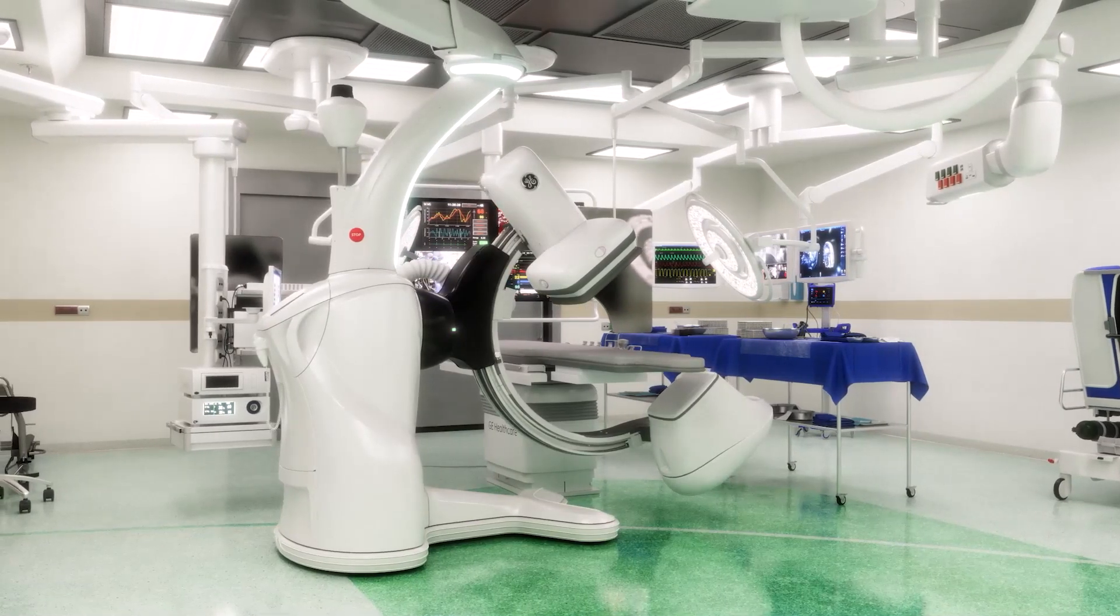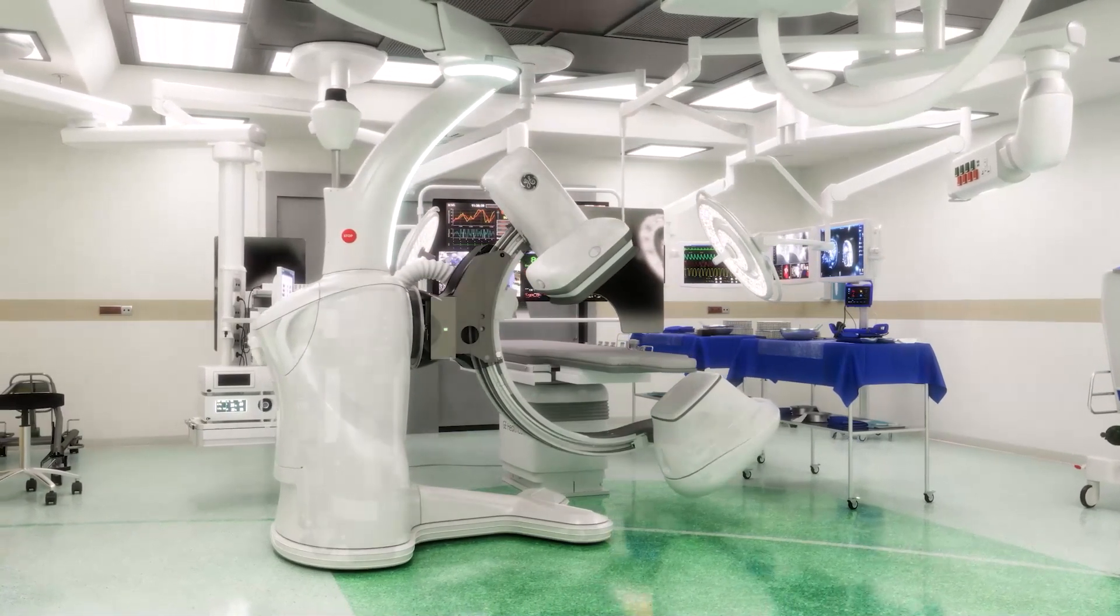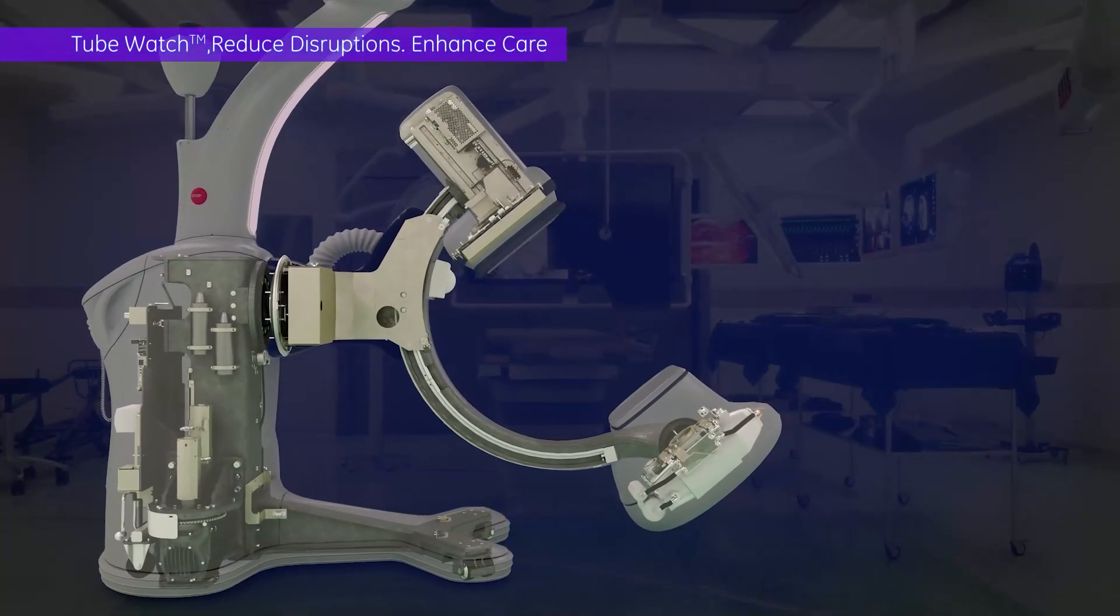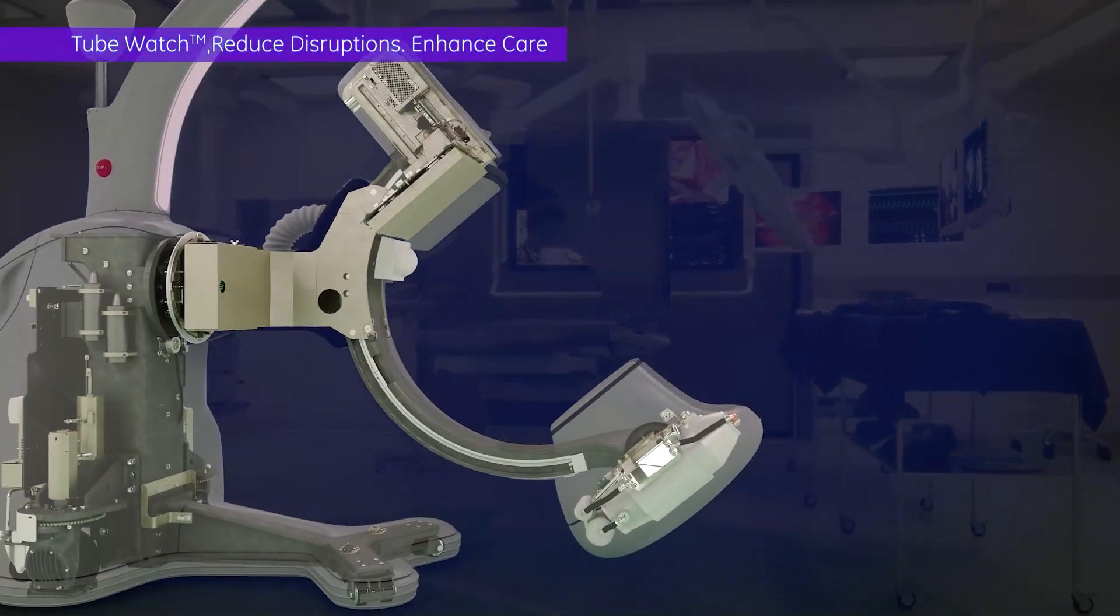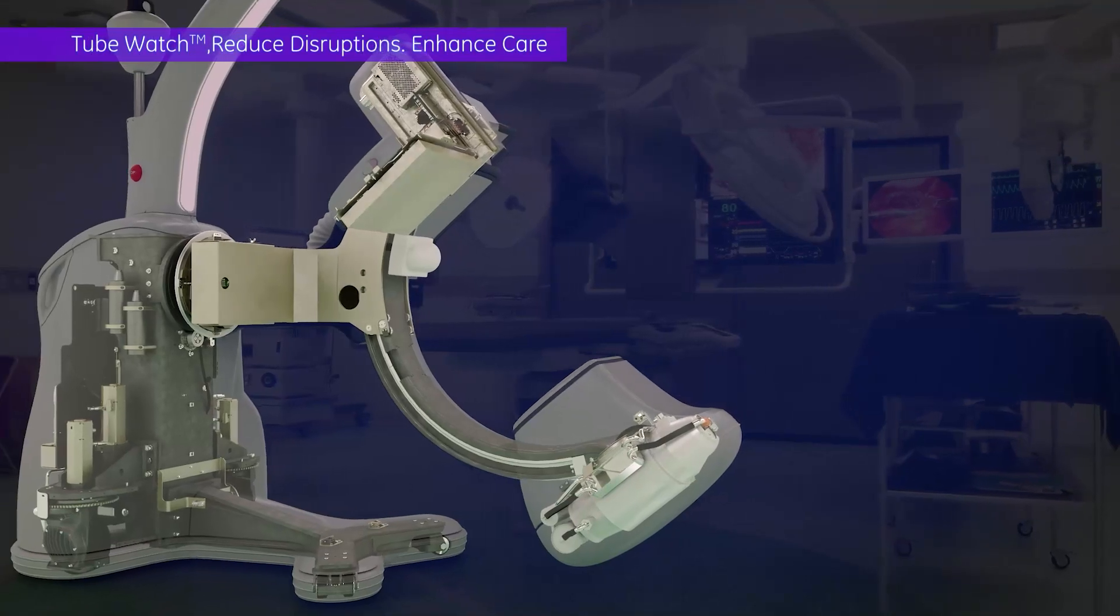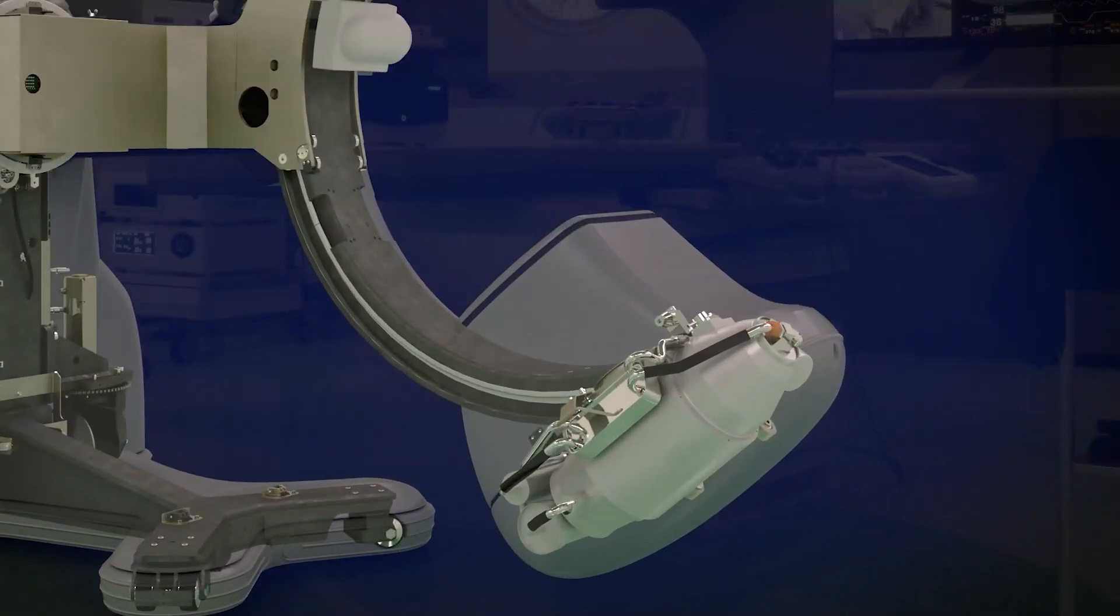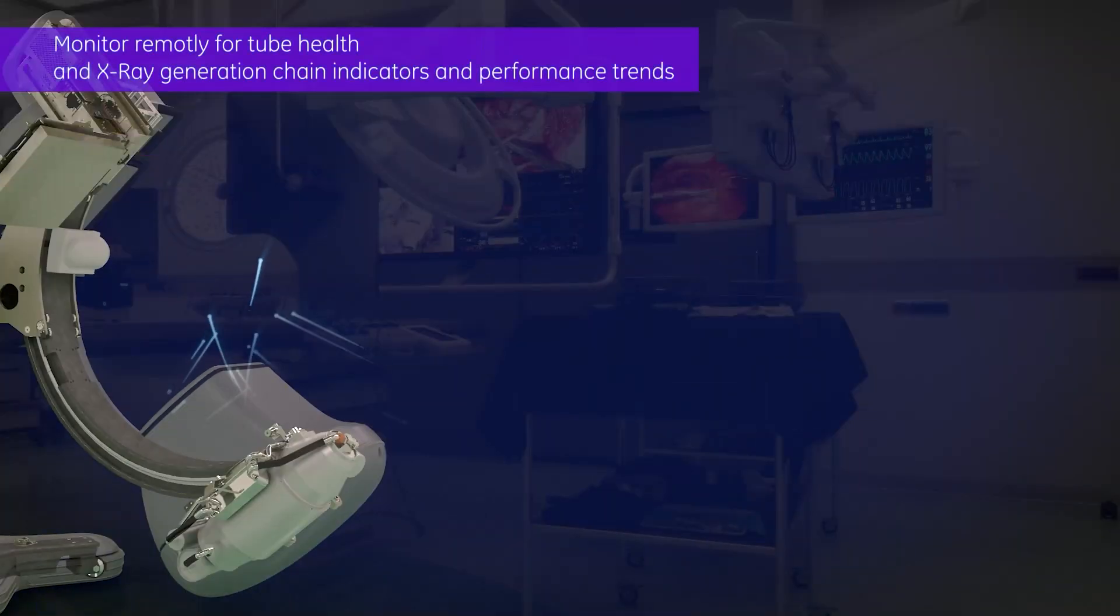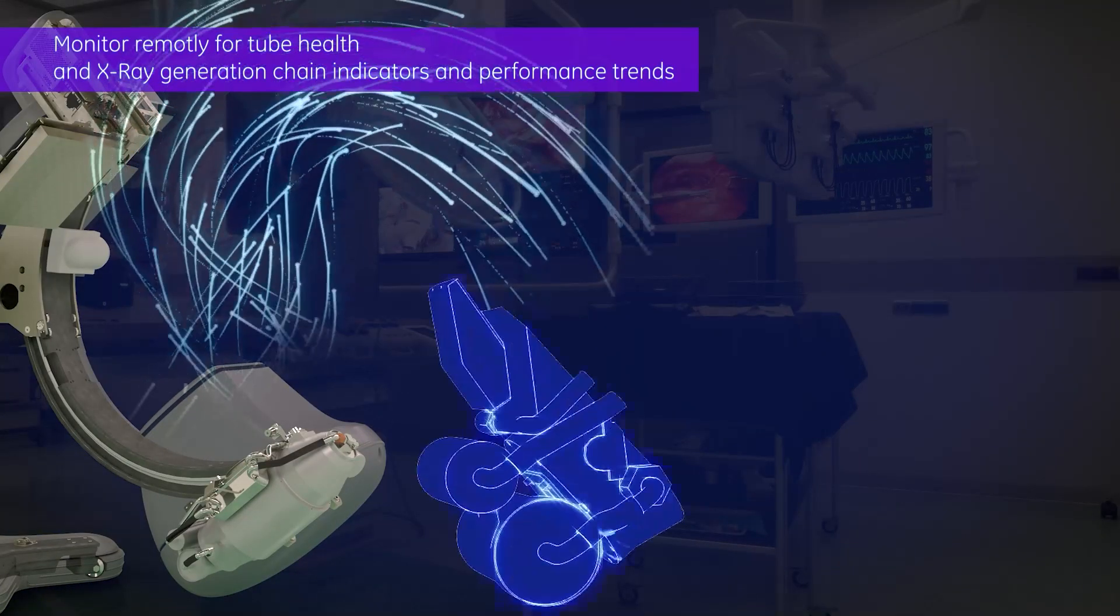TubeWatch as applied to IGS expands the capabilities of our current TubeWatch technology to remotely monitor and predict potential failures in the x-ray generation, including the tube, before any disruptions occur. This helps avoid disruption to patient care during procedures by converting potential unplanned downtime to planned events and delivers peace of mind by helping to avoid staff disruption and associated revenue loss.